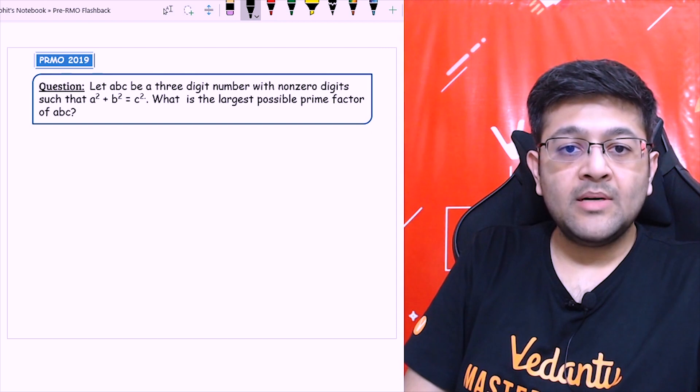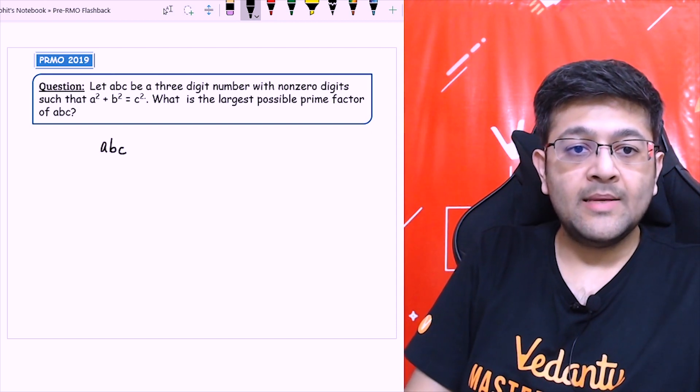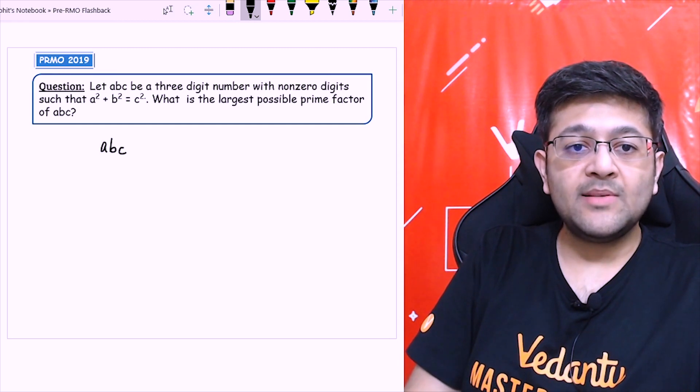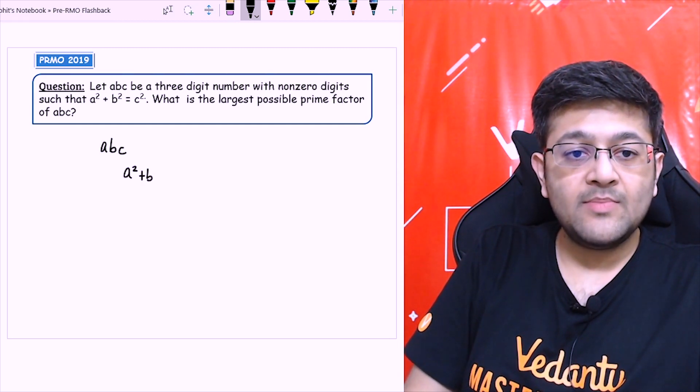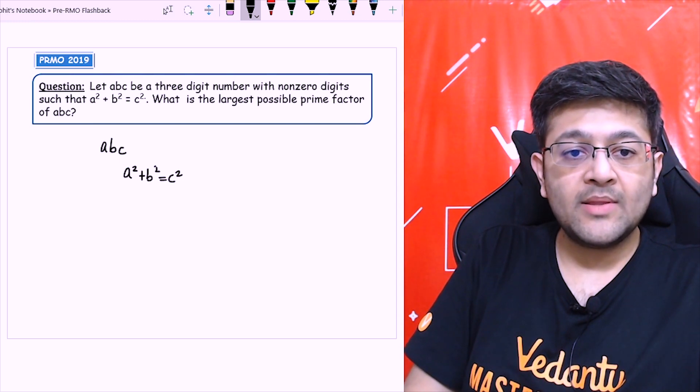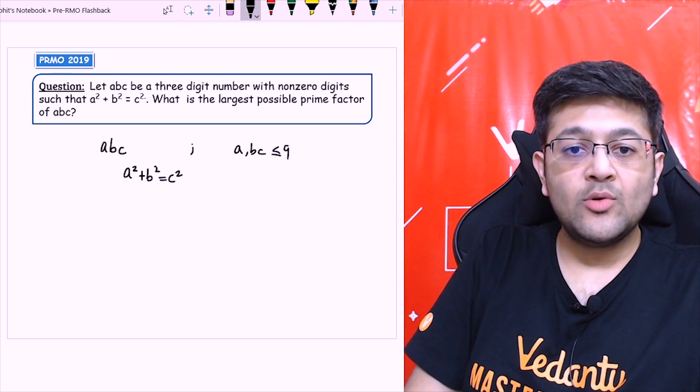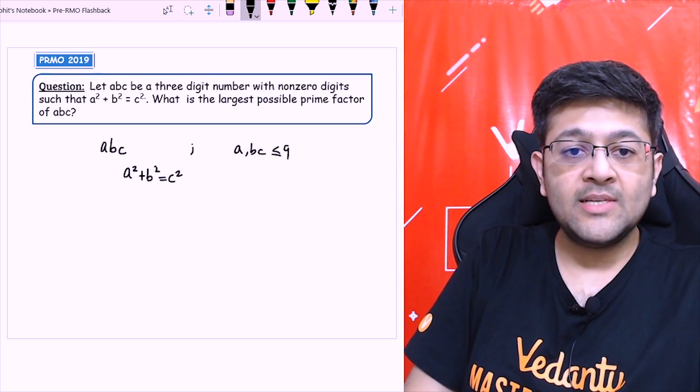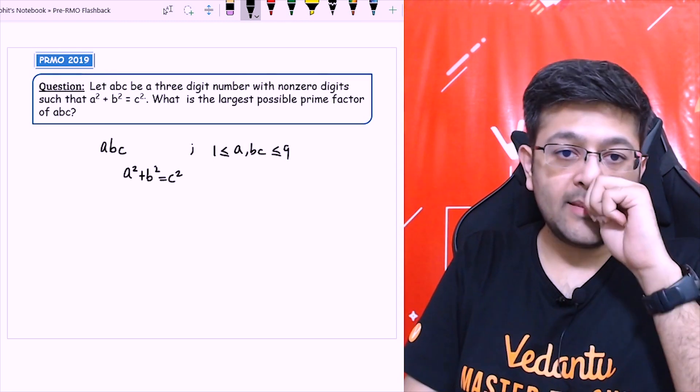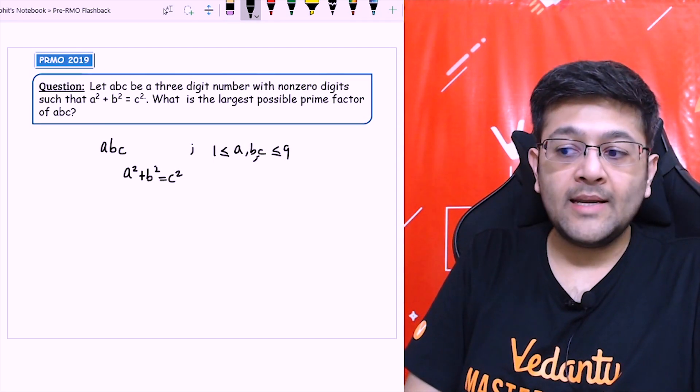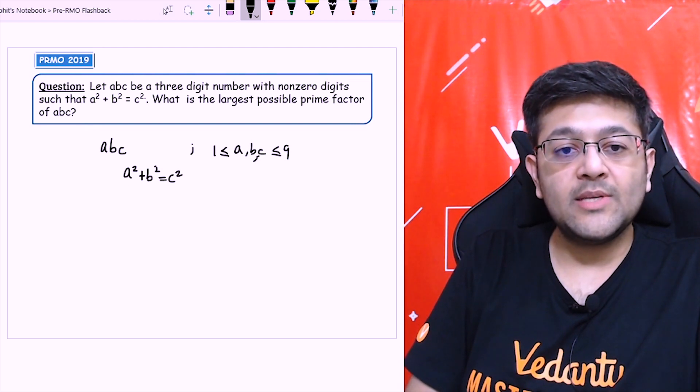Let ABC be a 3 digit number with non-zero digits, A, B and C, such that A square plus B square is equal to C square. All of ABC should be less than equal to 9 and non-zero digits, so I can say greater than equal to 1 also. So ABC lie between 1 and 9, with A square plus B square is equal to C square.